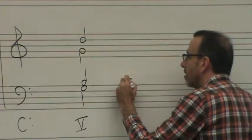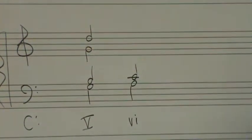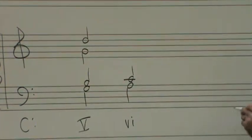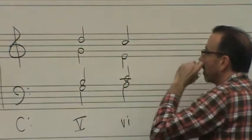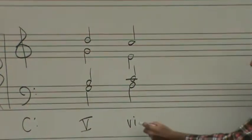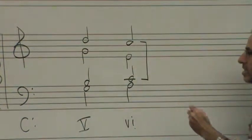I still want to actually resolve the leading tone up because that's one of my main tendency tones. But then in order to avoid other parallels, I'll move the upper voices down against it. And then we end up with a sixth chord with the third of that sixth chord doubled.